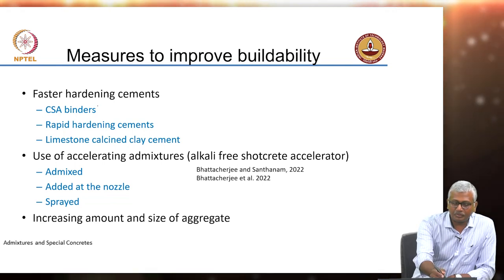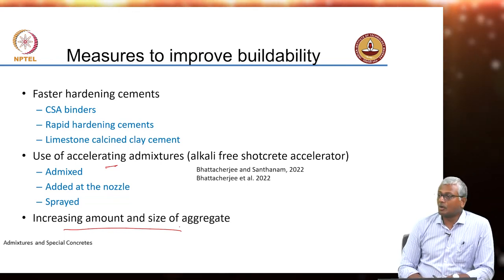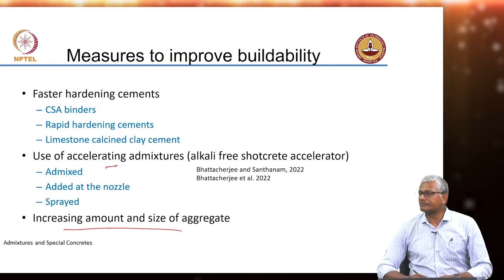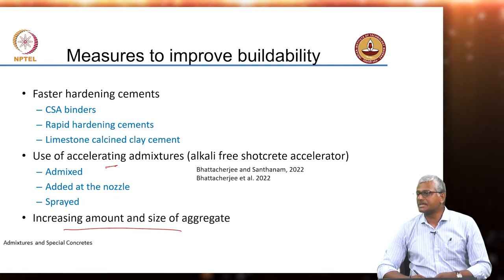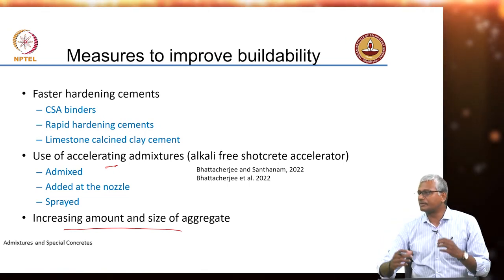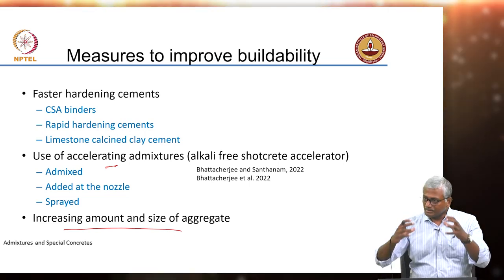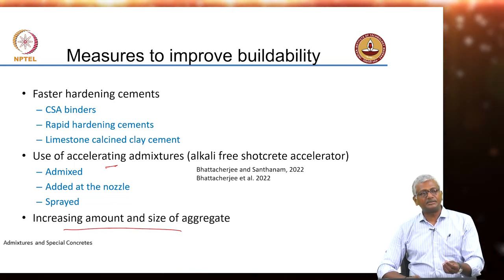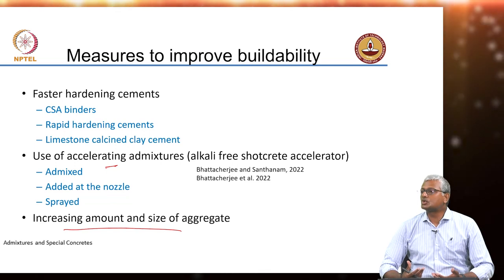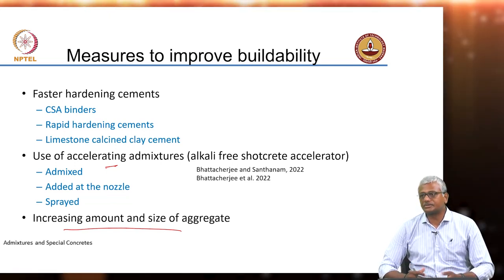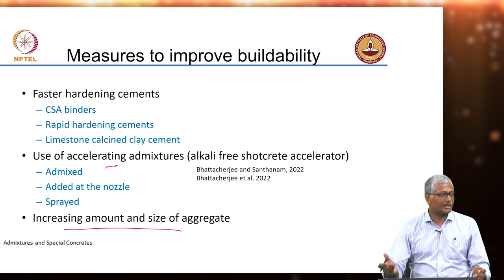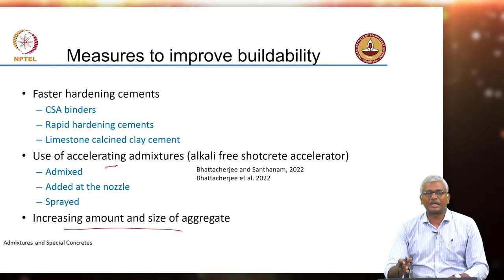Apart from faster hardening cements or accelerating admixtures, increasing the amount and size of aggregate can also improve buildability. A lot of aggregate will prevent collapse because of the three-dimensional lattice network it creates and the friction it offers. The lattice effect is better when aggregates are more numerous and larger, packing the volume much better. However, extruding coarse aggregate is a different matter — it is not easy, and when pressurizing and extruding, the possibility of separation is even more. Most examples from around the world are primarily based on mortar; very few actually use coarse aggregate.